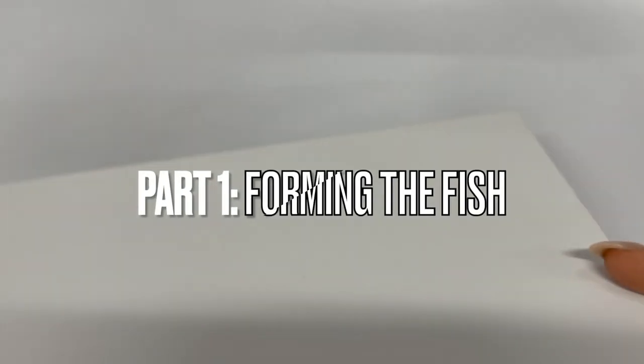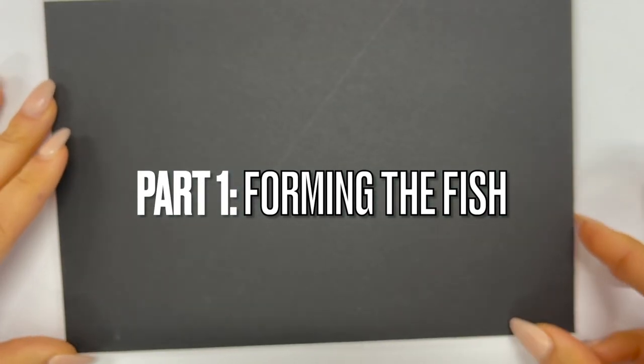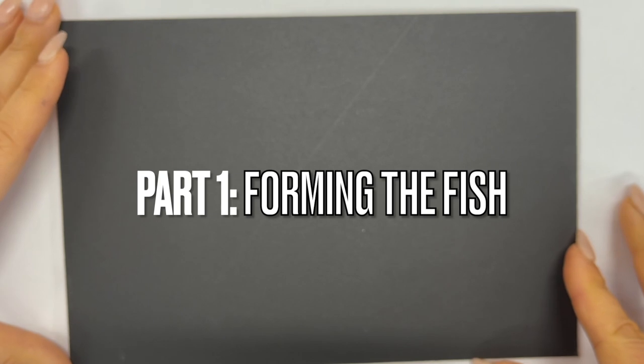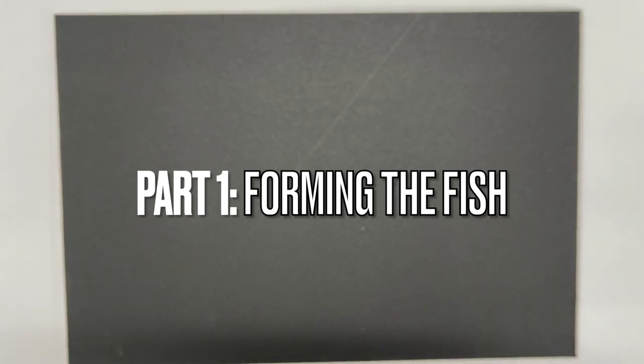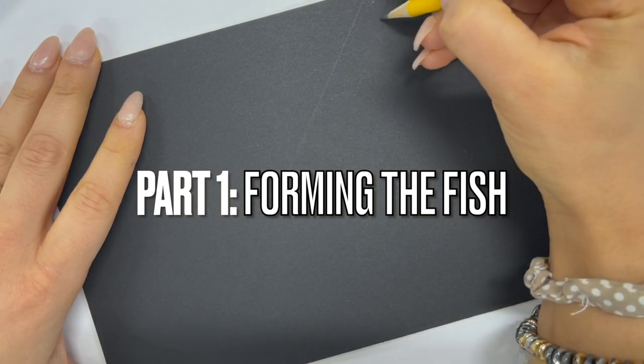We are going to begin with a piece of mat board. One side is black and the other side is white. You can use either side to create your fish on. The first thing you're going to do is write your name in the corner. I suggest the top corner because it will be easier if you want to add details to the bottom later.